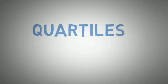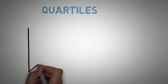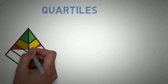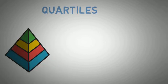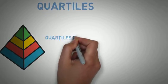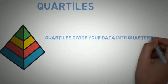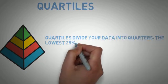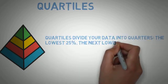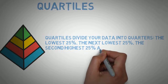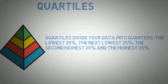Now let's move on to quartiles. Quartiles divide your data into quarters — the lowest, the next lowest, the second lowest, and the highest — each representing 25% of the data.